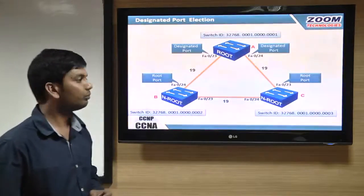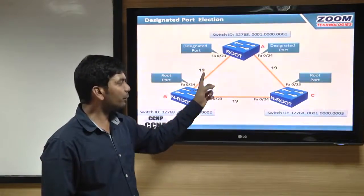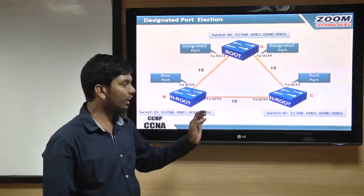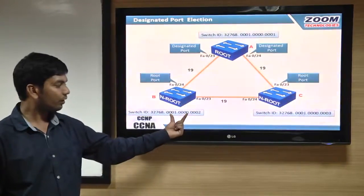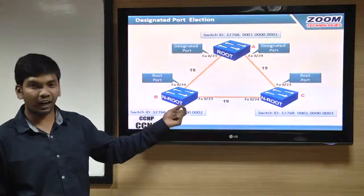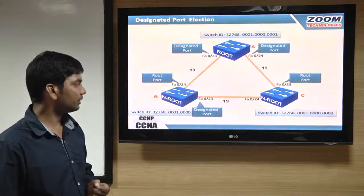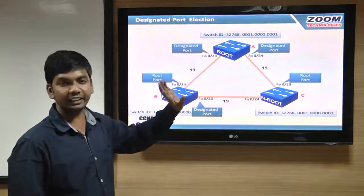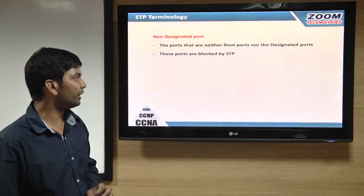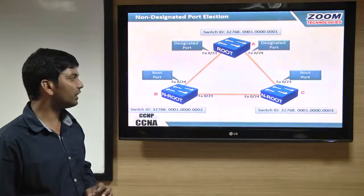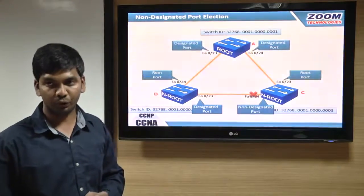For the link B to C, the 23rd port cost is 19 and the 24th port cost is also 19 — both have the same cost, so we check for the least neighbor switch ID. The neighbor on one side is B with ID 002, and the other is C. B has the least ID, so B's port becomes the designated port for that link. Now we have root ports and designated ports elected. The remaining port — the 24th port on switch C — which is neither designated nor root port, will be blocked by STP. This is the non-designated port.